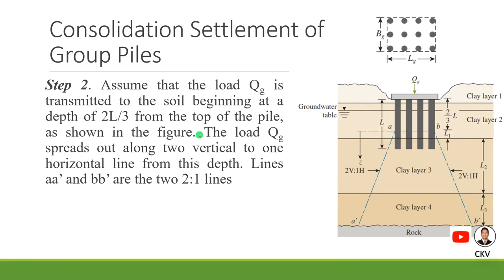Step 2: assume that the load Q_G is transmitted to the soil beginning at a depth of 2L/3 from the top of the pile, as shown in the figure. So if the full length of the pile is L, the stress distribution will start at 2/3 from the top of the pile — that is, where the pile is connected to the pile cap — and we spread the 2-vertical-to-1-horizontal stress distribution for that load Q_G starting from that point.